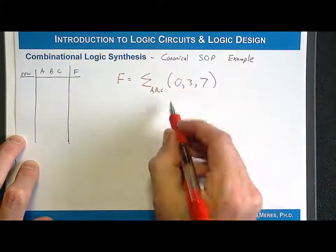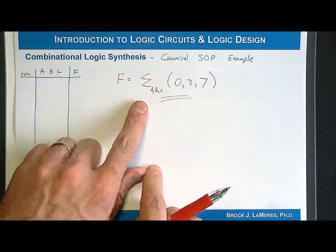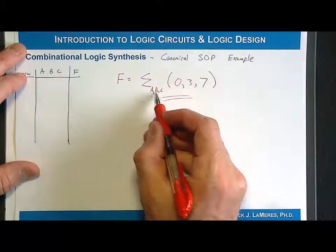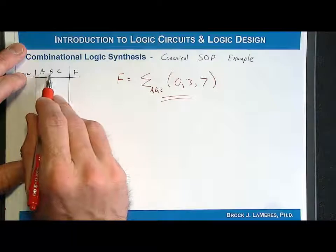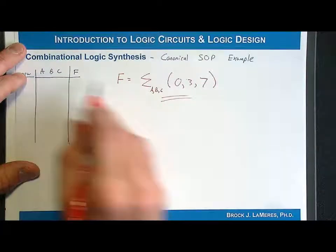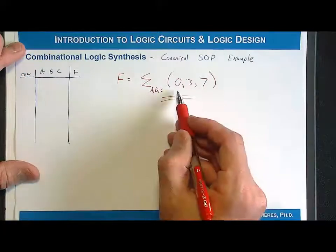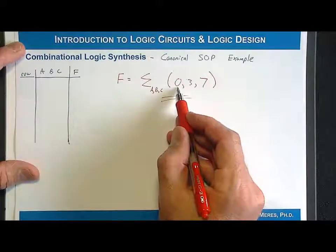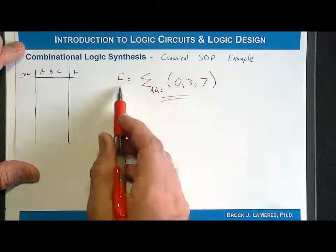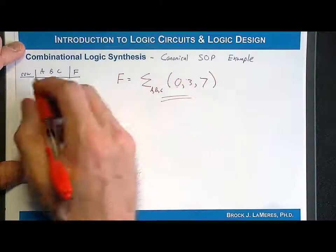So this is the functional description that we begin with. It's very simple and compact, but it tells us that we have three input variables A, B, and C, which I list in the truth table in that order. A is on the left, B in the center, C on the right, and I know that I have an output of 1 on rows 0, 3, and 7, and the output is called F.